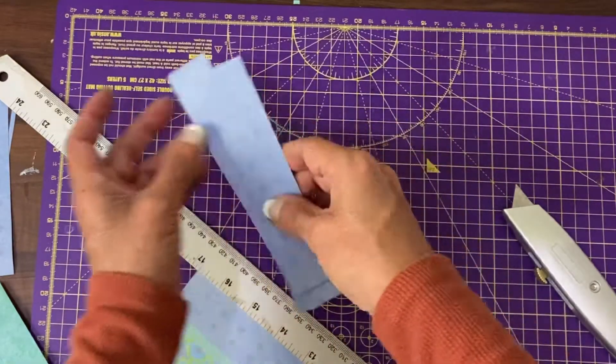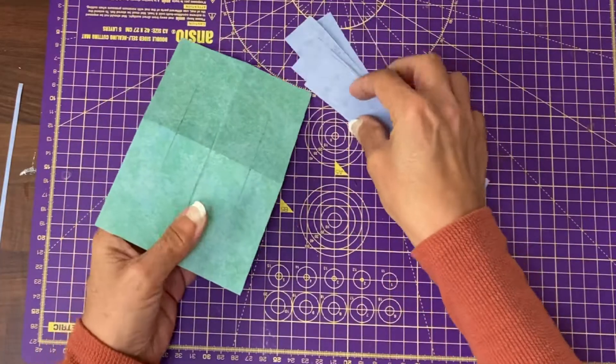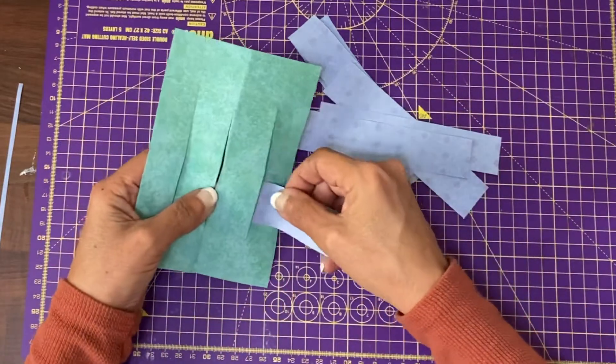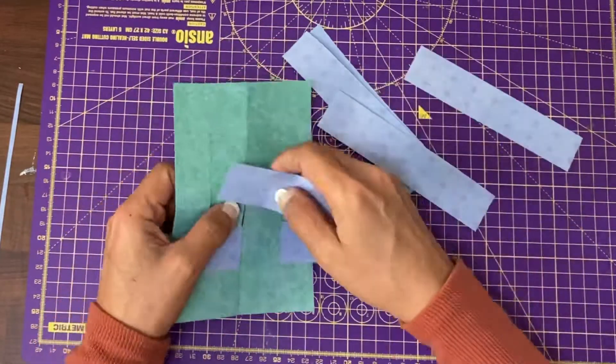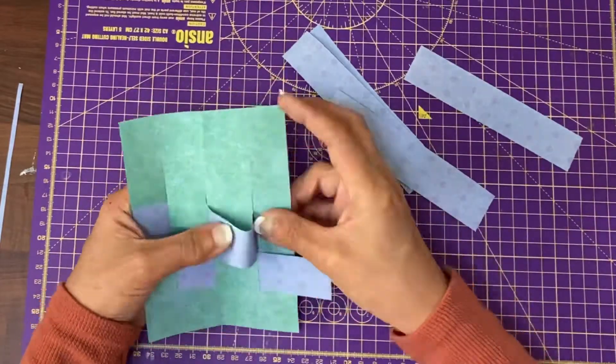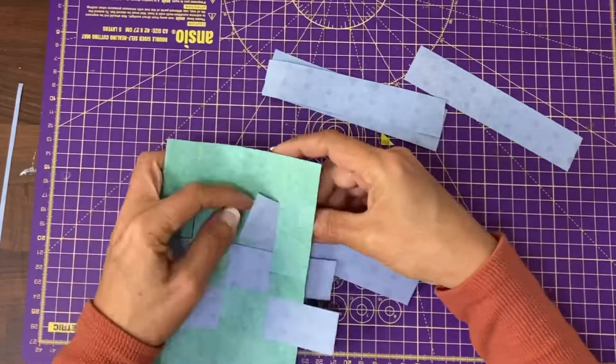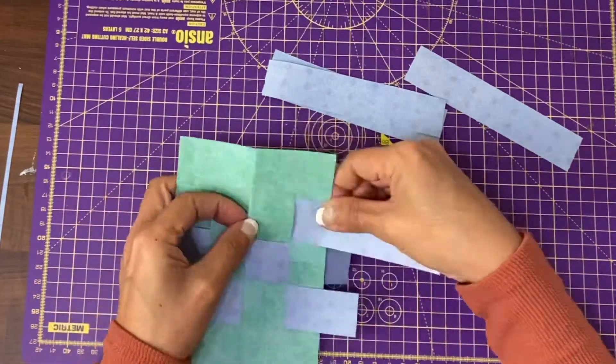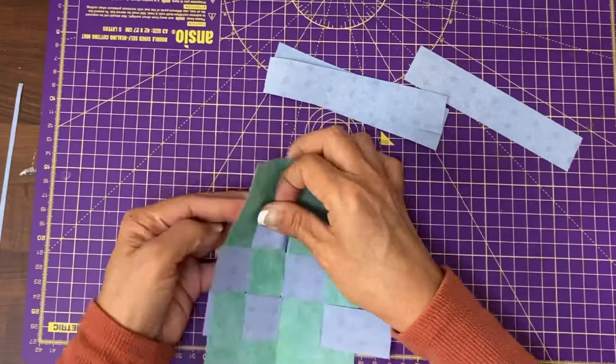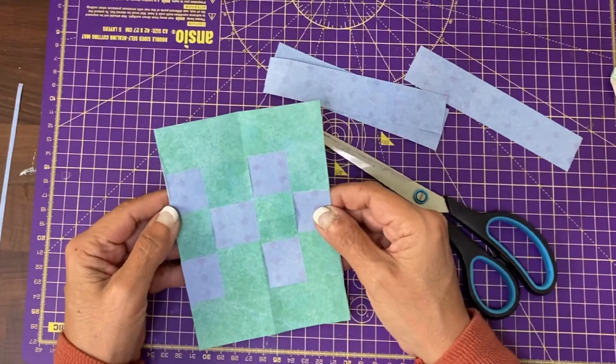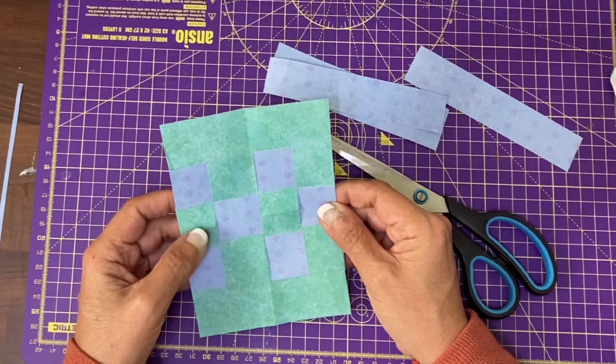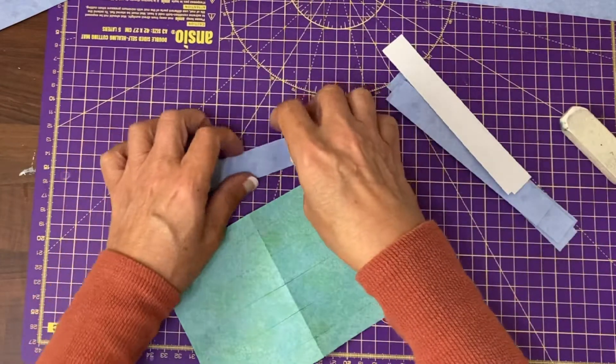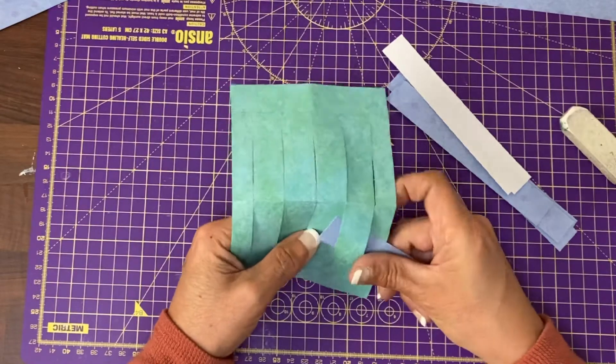We have our paper strips and all we're going to do is weave this piece of paper in between these pieces of paper. And there's a basic checkerboard type pattern. Do the same thing again. It's really warm in this room. We go in and out. Let's have a look.